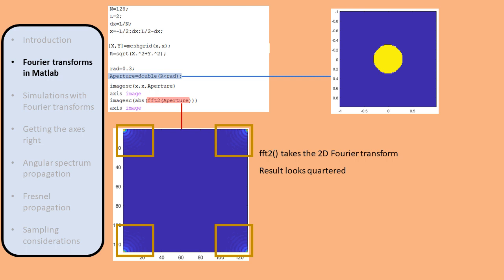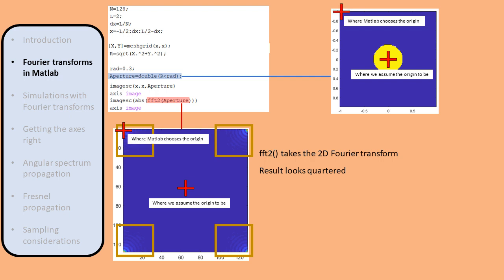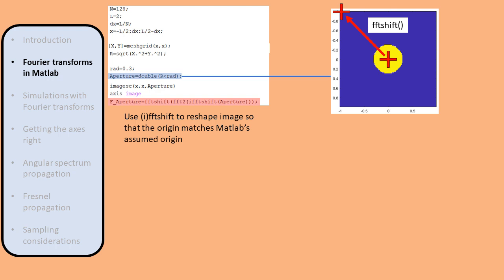Why is the Airy disk not intact and centered as it should be? The reason is that we assume the origin of our coordinate system is in the center of the matrix, but when MATLAB performs a Fourier transform, it assumes the origin is at the corner. The quartered Airy disk is centered around the corner of the matrix, which has periodic boundary conditions. To solve this problem, we apply the FFTshift operation, which rearranges the matrix so the origin is shifted from the center to the corner. Then FFT2 applies the Fourier transform as intended, and another FFTshift shifts the origin back to the center.